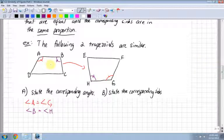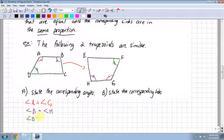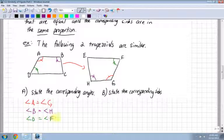Angle D is equal to angle F. So angle D equals angle F. Finally, angle C, the last one, is equal to angle E. So angle C equals angle E. I've stated all the corresponding angles, and notice they are equal.